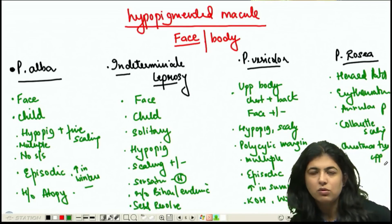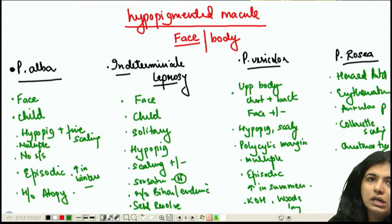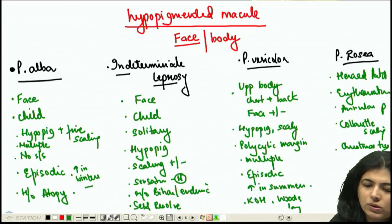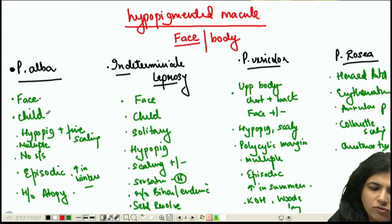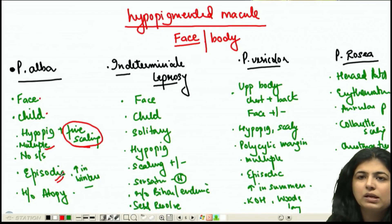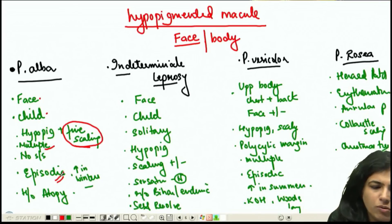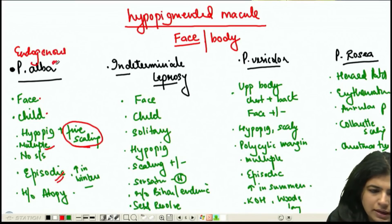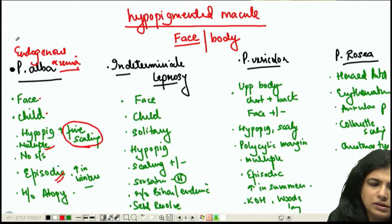So this is what you have to know when a hypopigmented lesion on the face or upper body comes to you in the exam. Pityriasis alba will almost always be on the face of a child, with fine scaling, multiple lesions, episodic nature, and a history of allergic tendency. They keep coming and going — it is just a form of endogenous eczema and doesn't require any treatment.